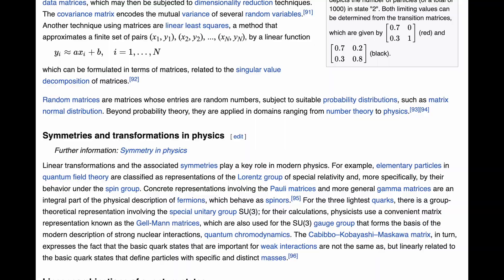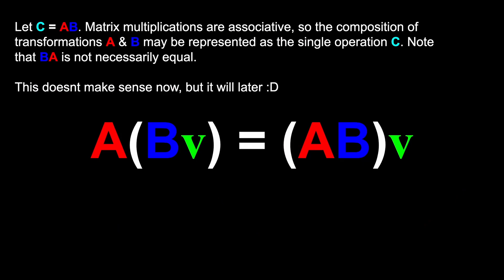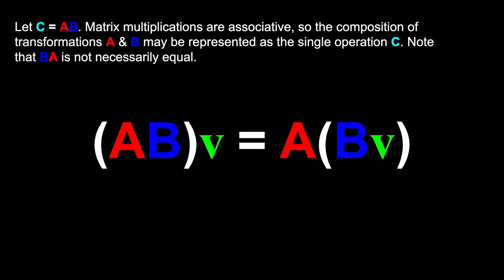Matrices are used for a lot of things, but I'm going to focus on linear transformations here. A linear transformation is pretty much a remapping from one coordinate system to another, and a matrix can be used to package multiple of these transformations into a single operation and a lot of other things, but we're getting ahead of ourselves here.